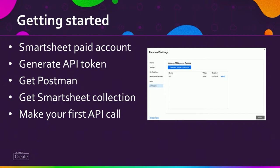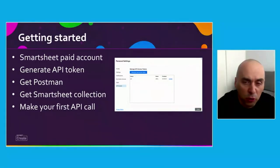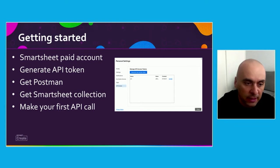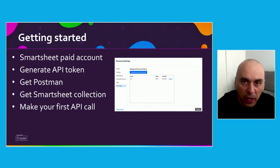Once you have this, you can get Postman. If you're not familiar with Postman.com, have a look — it's a very nice REST API client that allows you to interact with REST APIs. Once you have Postman installed, you can get the Postman Smartsheet collection and environment. Using the collection — there are hundreds of API calls — you can practice in your own environment with your own API token for Smartsheets, and make your first API call to update a row, a cell, or a column.